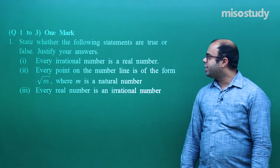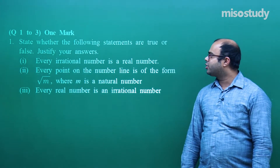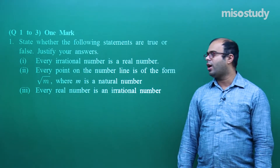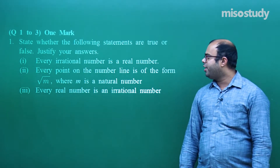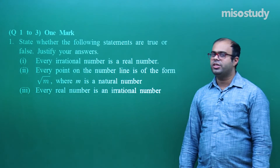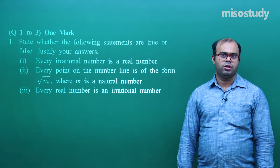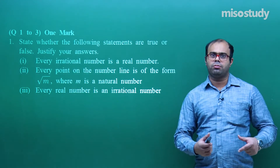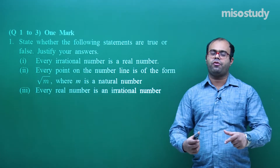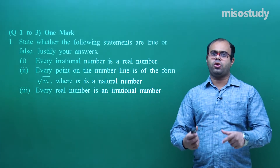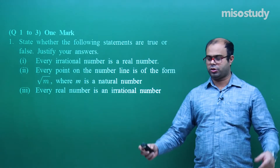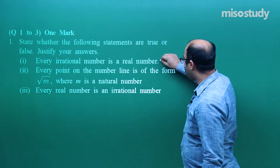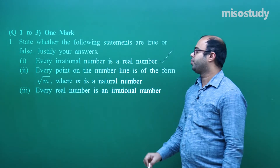It says state whether the following statements are true or false and justify your answers. First: every irrational number is a real number. This is a true statement because irrational numbers and rational numbers together form the set of real numbers. So every irrational number is a real number — this is true.